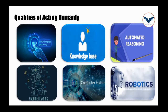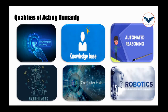Next one is computer vision. Computer vision is about perceiving objects and is related to image processing. If a machine wants to act like a human, then it should have computer vision. For example, if I show an apple to the machine to recognize which fruit it is, the answer should be apple — it won't give the answer as orange. This is the quality of computer vision in intelligent machines.